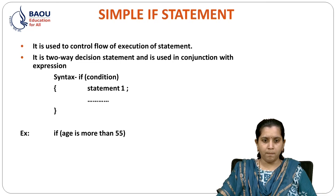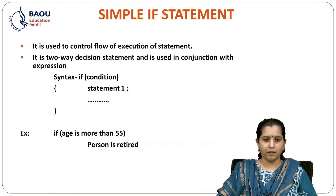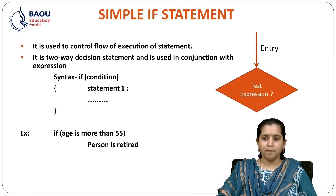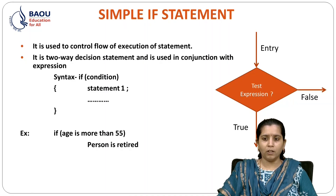Let's see one example: if age is more than 55, then person is retired. What is the flowchart of IF statement? First, the flowchart will start. After that, it will test the condition. If it is true, then the statement is executed. Otherwise, it will go out of the execution — that is, control flow.